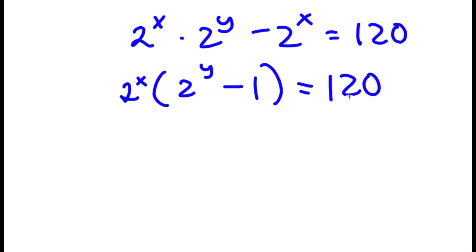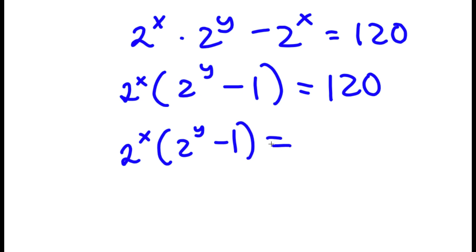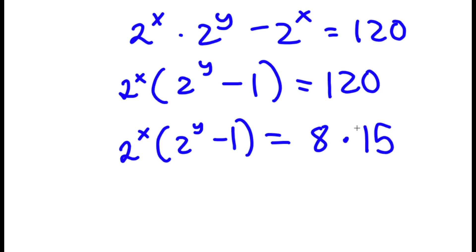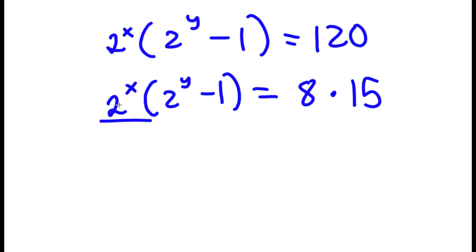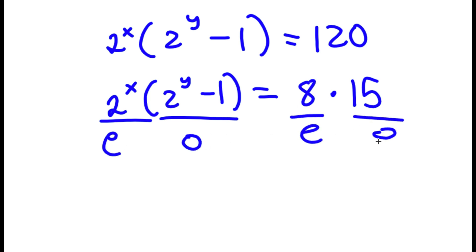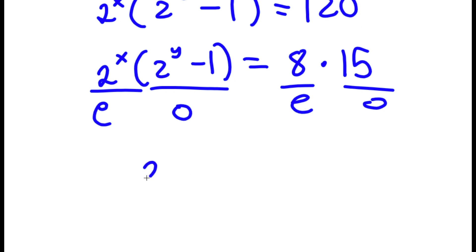Now 120 is the same thing as 8 times 15. Notice that 2 to the power of x results in an even number because 2 to the power of any number is even, and 2 to the power of y minus 1 — an even number minus 1 — is an odd number. So 8 is even and 15 is odd. Since an even times an odd equals an even times an odd, the even numbers equal each other: 2 to the power of x equals 8, and the odd numbers equal each other: 2 to the power of y minus 1 equals 15.